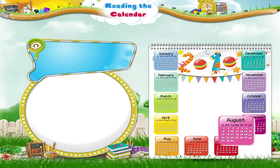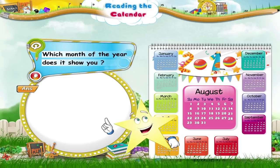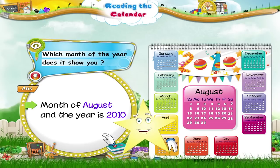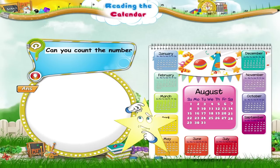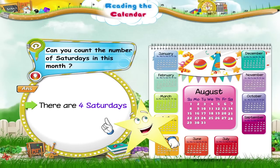Here is a calendar. Starry, which month of the year does it show you? Right! It is the month of August and the year is 2010. Can you count the number of Saturdays in this month, Starry? Yes, there are four Saturdays in August.